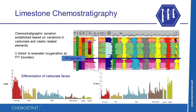High-resolution chemostratigraphy is also applicable to clean carbonate sequences by characterising subtle trace element variations in carbonate and detrital phases, as shown here in carbonates that straddled the Permian-Triassic boundary from the Middle East. In addition, elemental data from cuttings can also be used to differentiate carbonate facies that control reservoir quality, which is an application that can aid in well-site geo-steering.